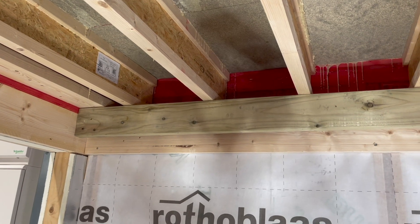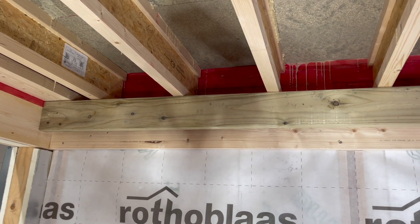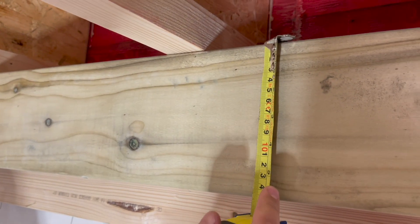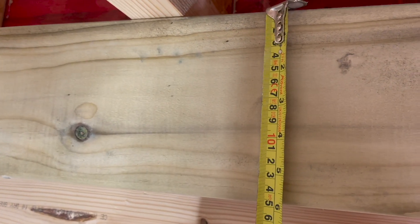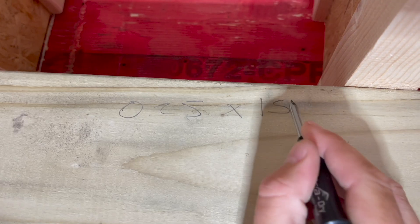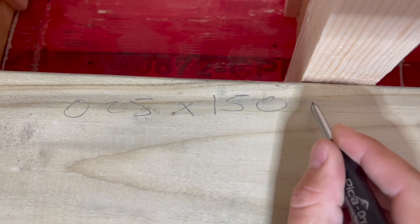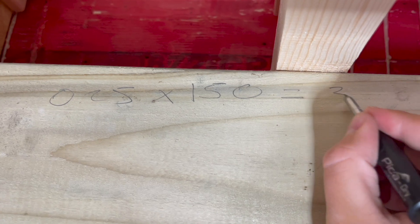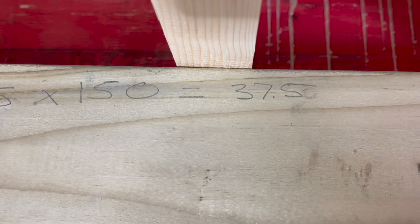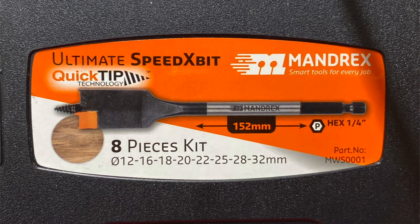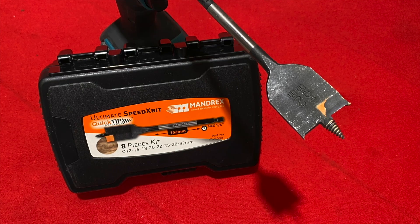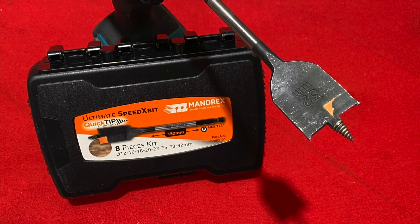Let's break these down a little further. Taking a standard solid joist with a depth of 150mm as an example: if we calculate 0.25 times 150mm, we deduce that the largest diameter hole we are permitted to drill is 37.5mm. Do we go with that 38mm Mandrex Ultimate Speed X flat wood bit, or perhaps stick with the 32mm also on offer to be on the safe side?